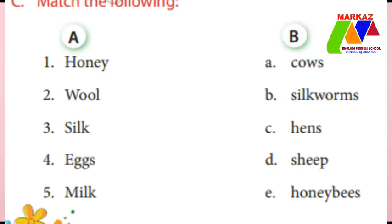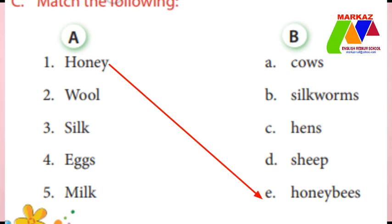Number C: match the following. You can see two columns, A and B. First column: honey, wool, silk, eggs, and milk. Second column: cows, silkworm, hens, sheep, and honeybees. First one — honey: we get honey from honeybees, so match it with honeybees. That is E.